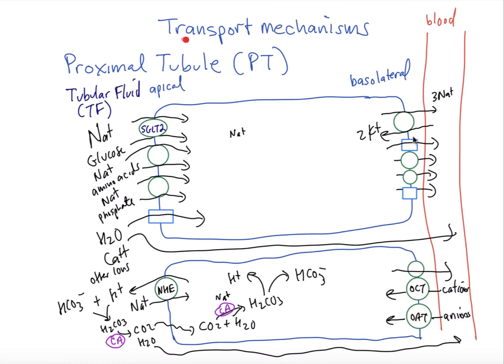So now we're going to talk about transport mechanisms in the nephron and we're going to start with the proximal tubule, which we'll abbreviate PT. We can see we have a cell drawn here and the thing about the nephron cells is that there's an apical side that faces the tubular fluid and there's a basolateral side that faces the blood.